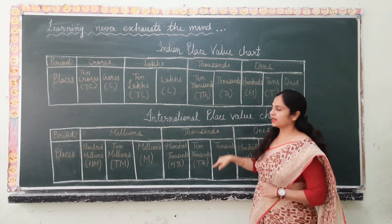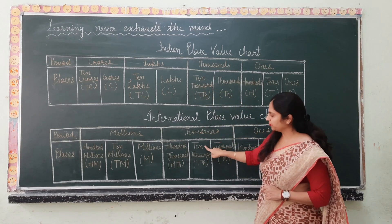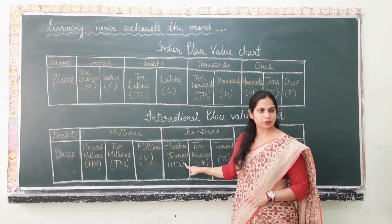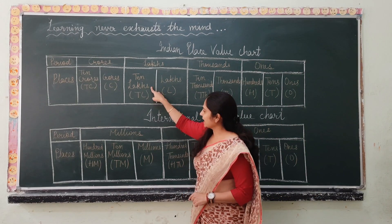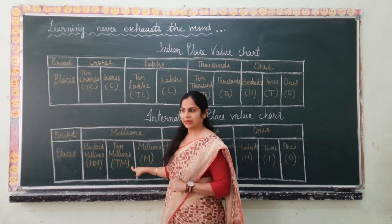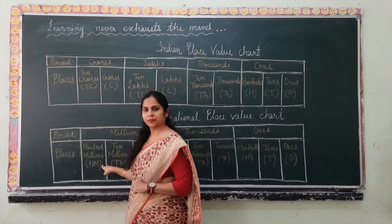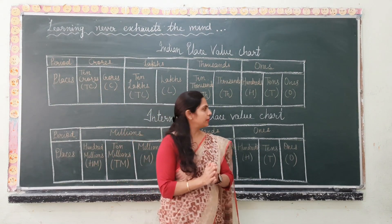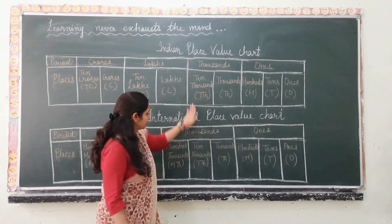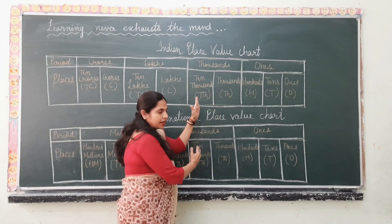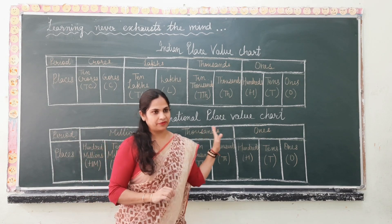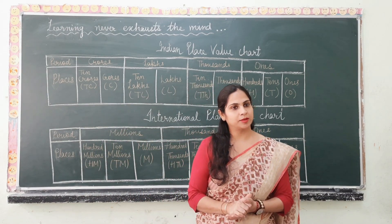Comparing Indian and international place value charts: 10,000 is equal to 10,000 — both are the same. But note: 1,00,000 (Indian) equals 100,000 (international). 10,00,000 equals 1,000,000 — one million. And 1,00,00,000 equals 10,000,000 — ten million. Values up to ten thousand are the same in both systems, but beyond that you have to learn the equivalents.